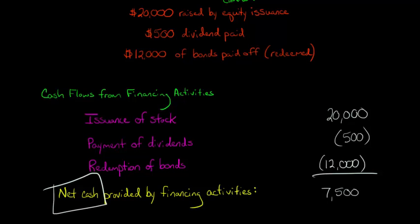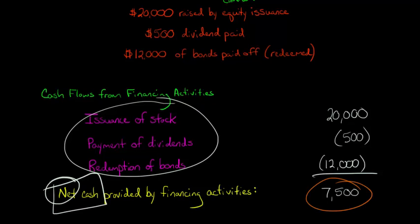So what does that mean? That means that the net effect of all the financing activities we did here during the year or during the quarter is that we generated $7,500 worth of cash. Now, let's say, let's just assume that this had actually been a negative number. Then this part right here would say net cash used by financing activities.